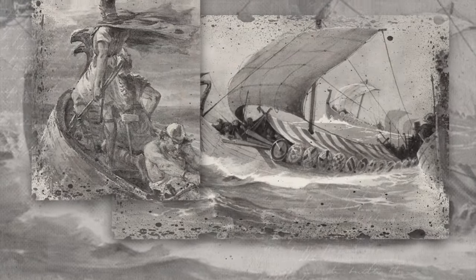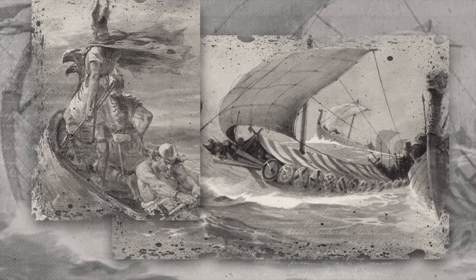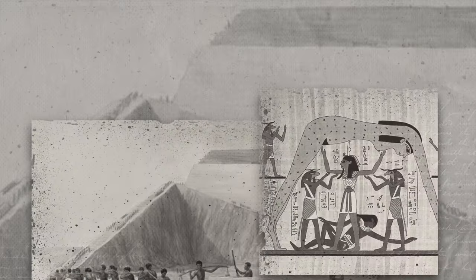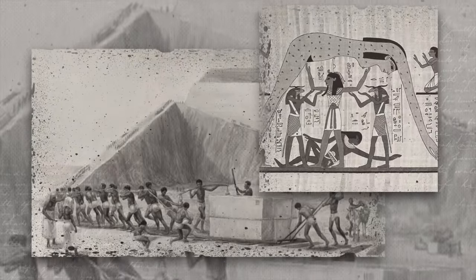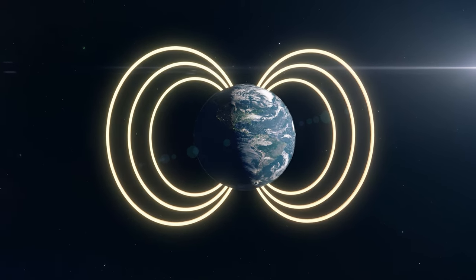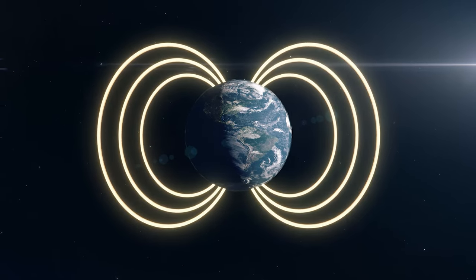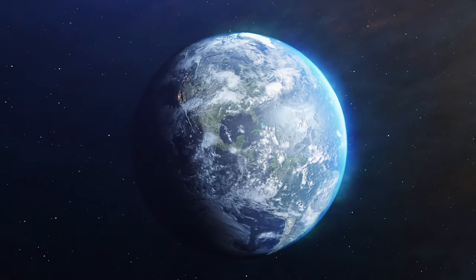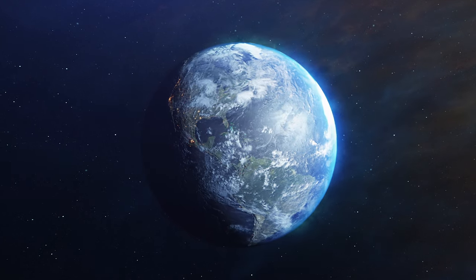For millennia, mankind has looked to the stars to find their way, unaware that an invisible guide silently guided them. This guide, the Earth's magnetic field and invisible shield, was our silent protector, shielding us from the merciless solar winds and cosmic radiations.